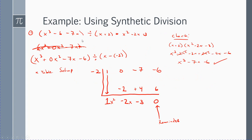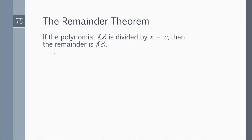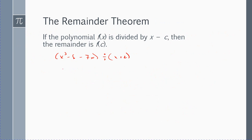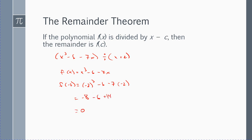So x cubed minus 6 minus 7x divided by x plus 2 — the remainder was equal to 0. So if this is my f of x and you were to plug in f of negative 2, you get negative 2 cubed minus 6 minus 7 times negative 2. That would be minus 8 minus 6 plus 14, which equals 0.